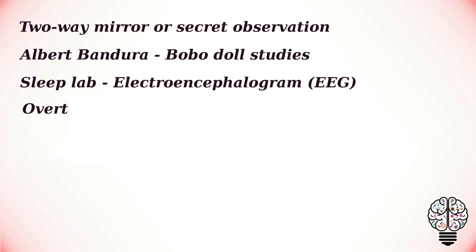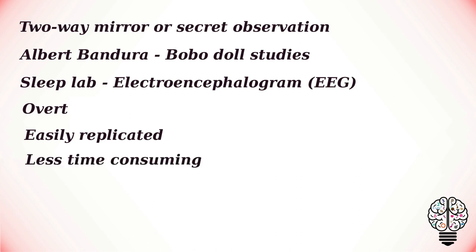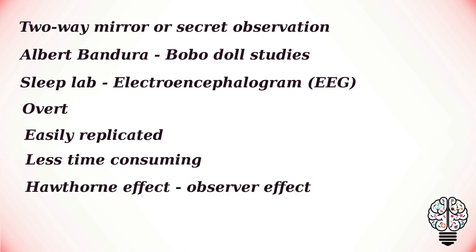Controlled observations are usually overt, as researchers explain the research aim to the group so participants know they are being observed. Controlled observations can be easily replicated by other researchers using the same observation schedule. The data obtained from structured observations is easier to analyze as it is numerical, making it a less time-consuming method compared to naturalistic observations. Controlled observations are also quick to conduct.